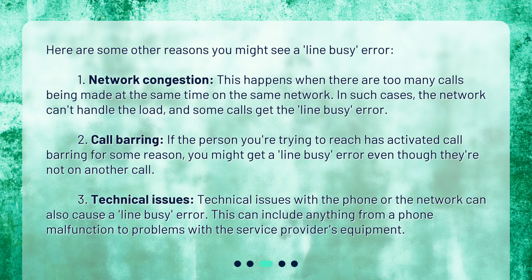Number 2: Call barring. If the person you're trying to reach has activated call barring for some reason, you might get a line busy error even though they're not on another call. Number 3: Technical issues. Technical issues with the phone or the network can also cause a line busy error. This can include anything from a phone malfunction to problems with the service provider's equipment.